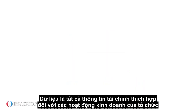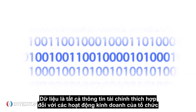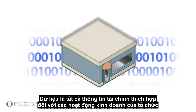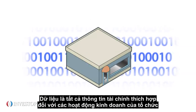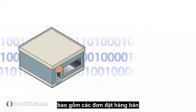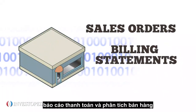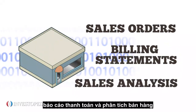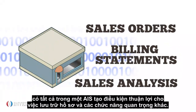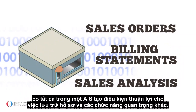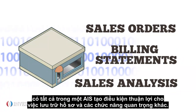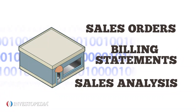The data is all pertinent financial information to an organization's business practices. That includes sale orders, billing statements, and sales analysis. Having it all in one AIS facilitates record-keeping and other important functions.